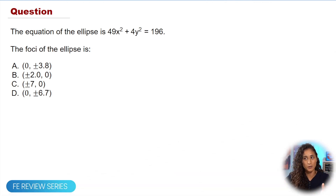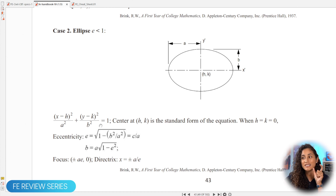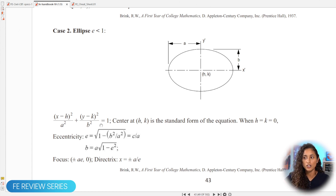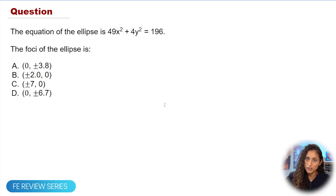We are given the equation of the ellipse and we want to find the foci. The first thing we need to do is go to the reference handbook and take a look at the equations. Under math, here we have the ellipse — note that this equation is the standard form. Before we can solve for the foci, we need to convert our equation into standard form. Then we determine what A squared and B squared are, and once we have those two values, we can easily solve for the foci.